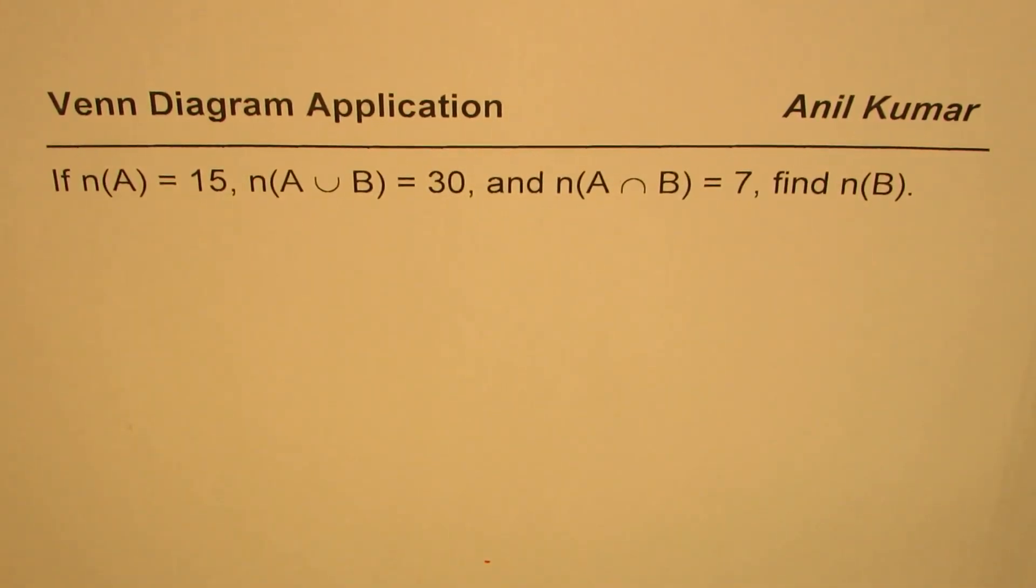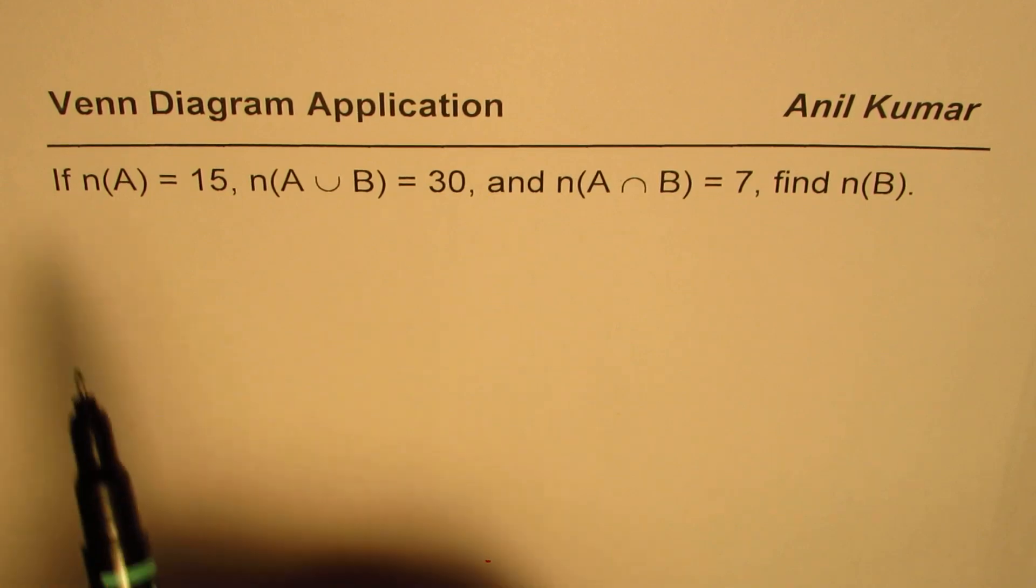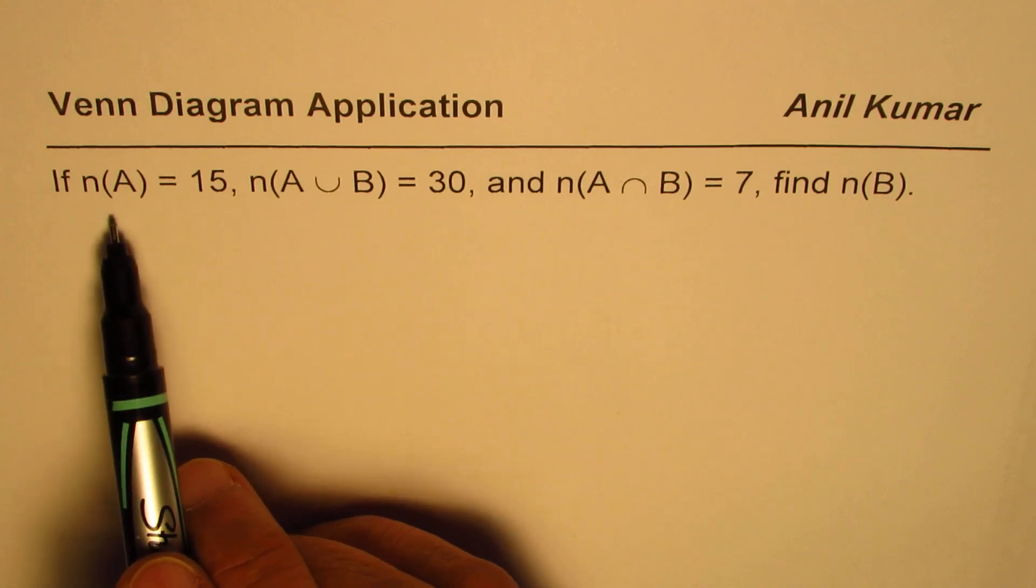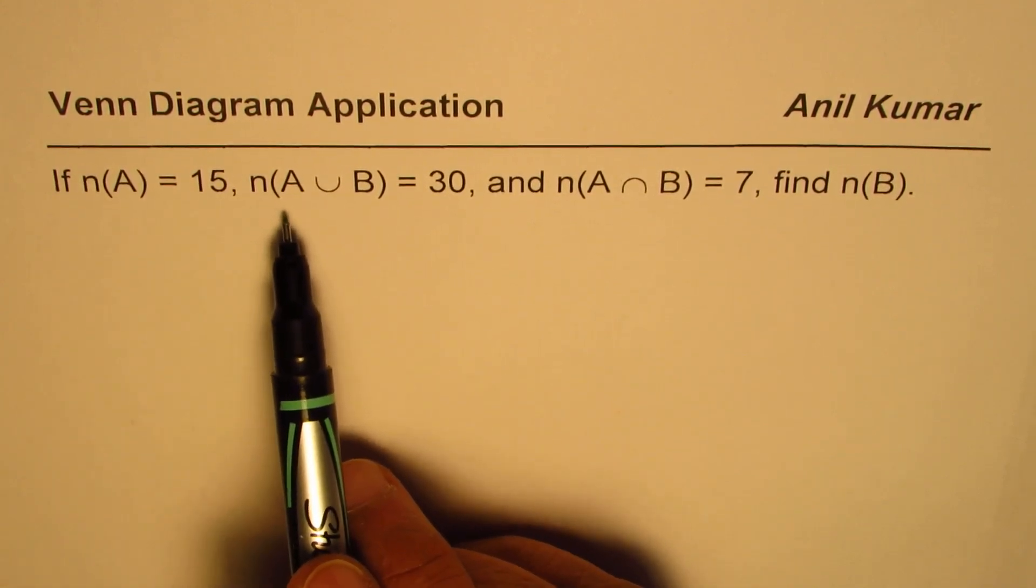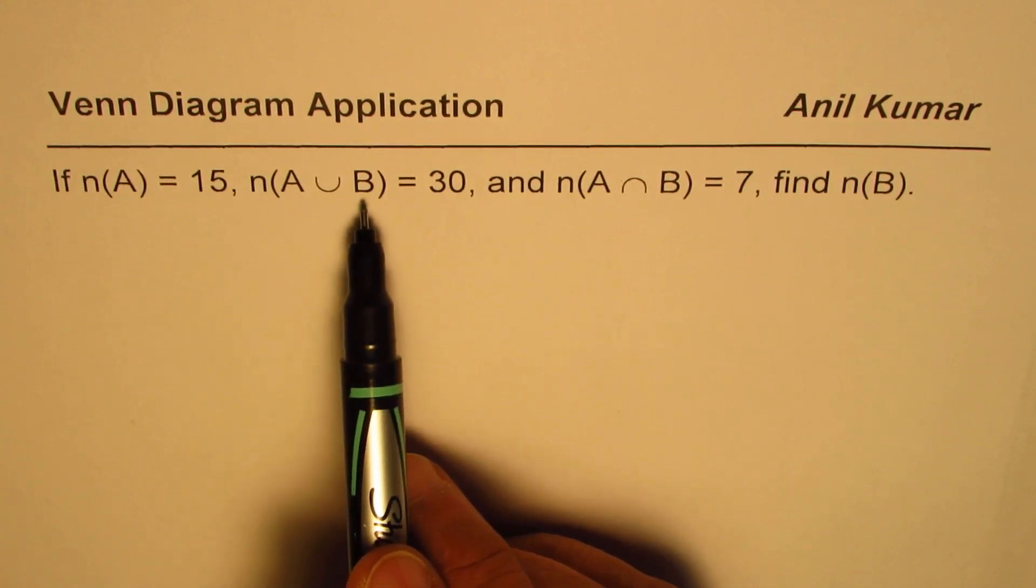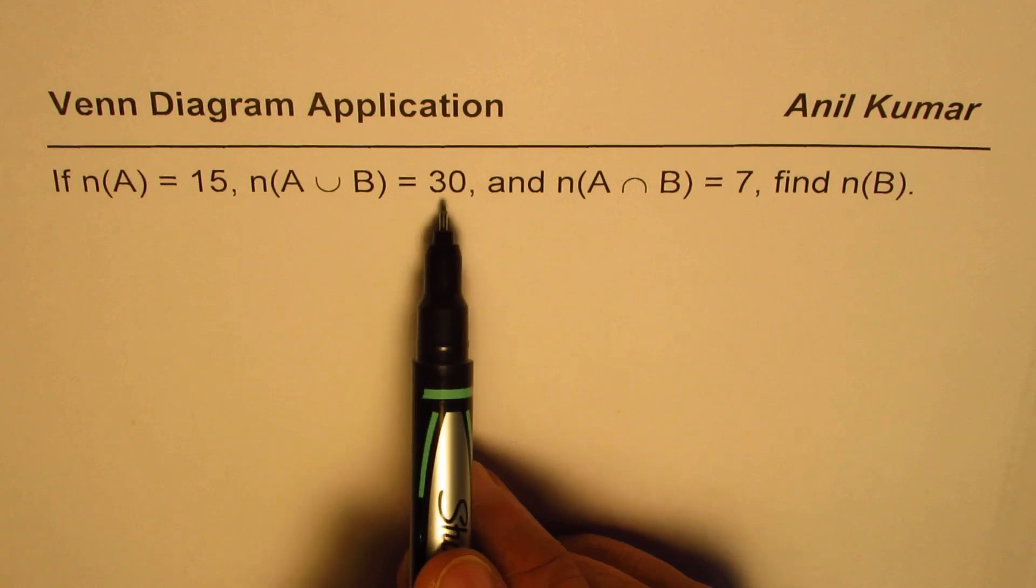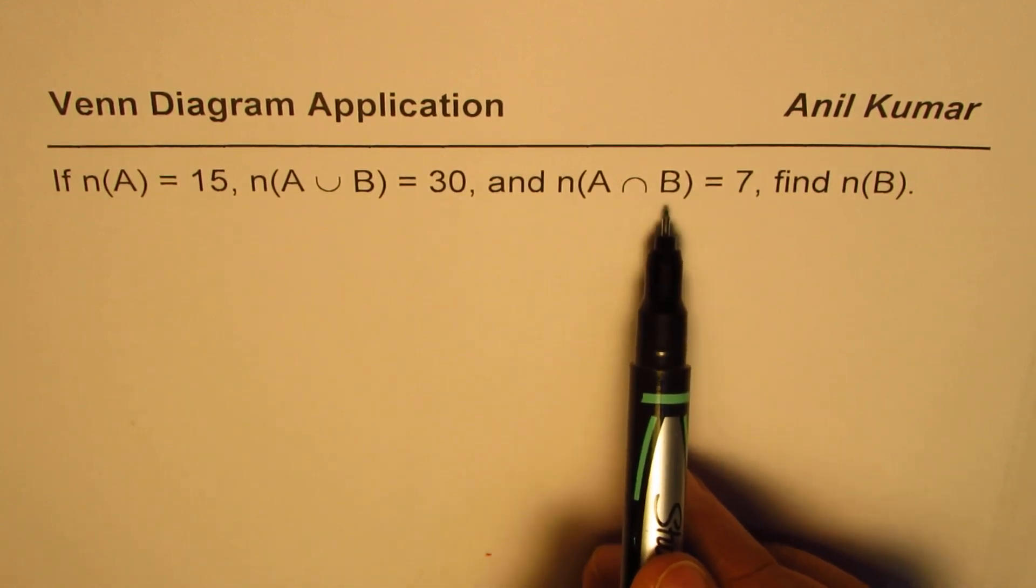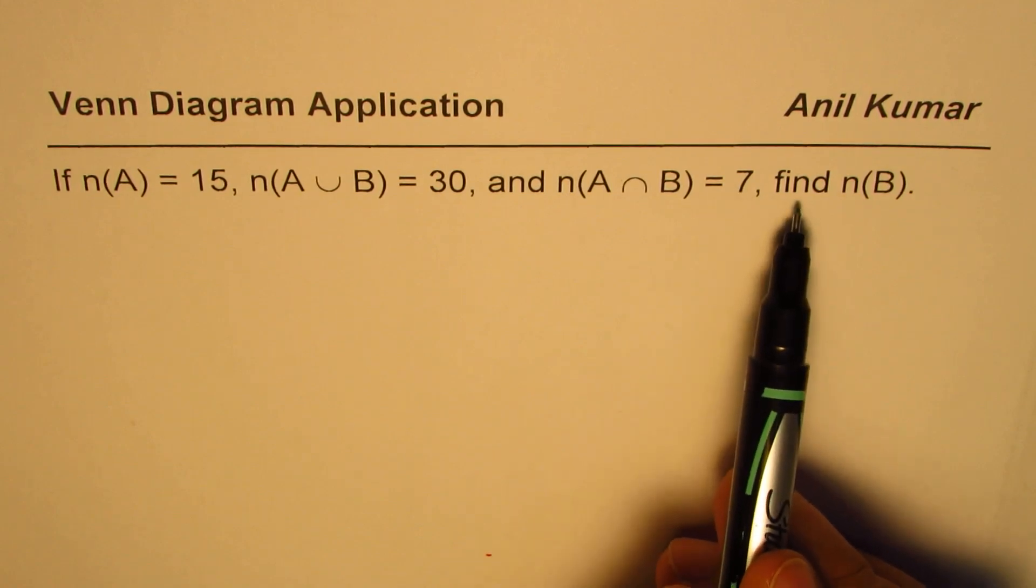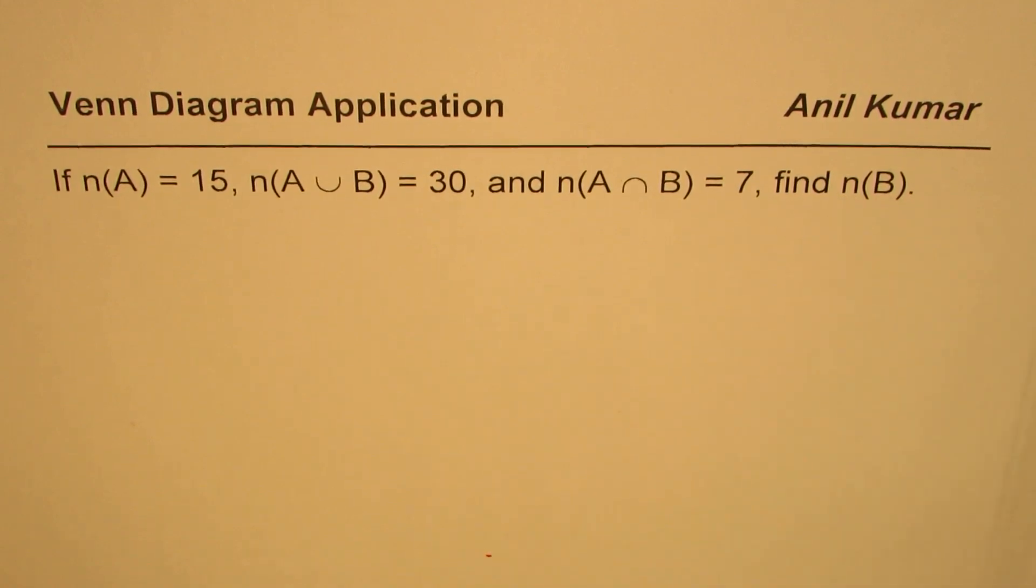Hi, I'm Anil Kumar, and here is a question on application of Venn Diagram. Question is, if number of elements in A is equal to 15, number of elements in A union B equals to 30, and number of elements in A intersection B equals to 7, find number of elements in B.